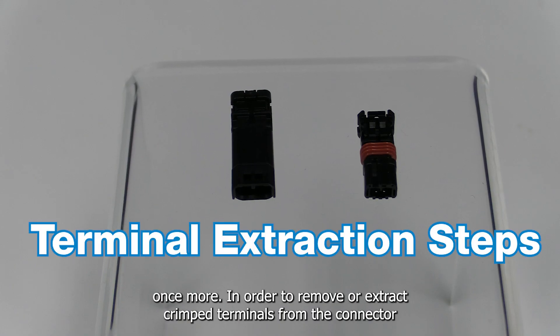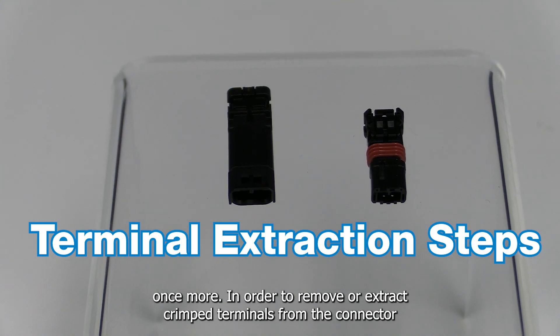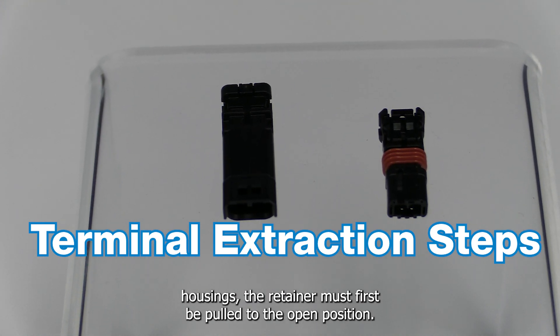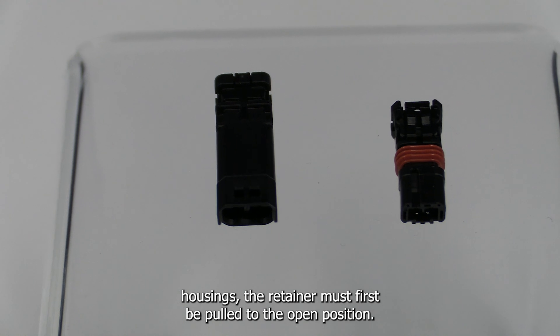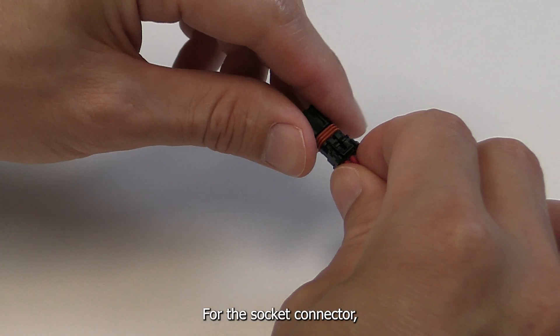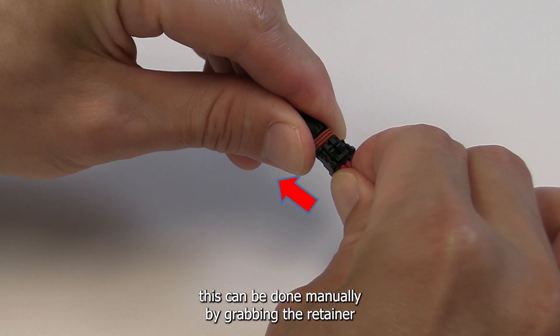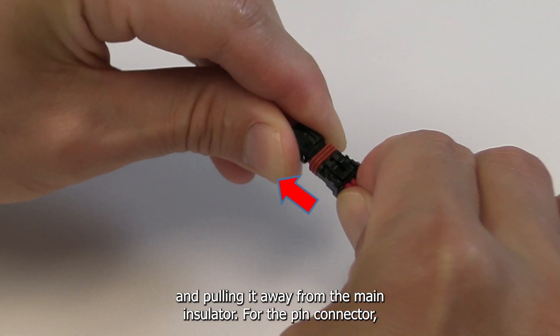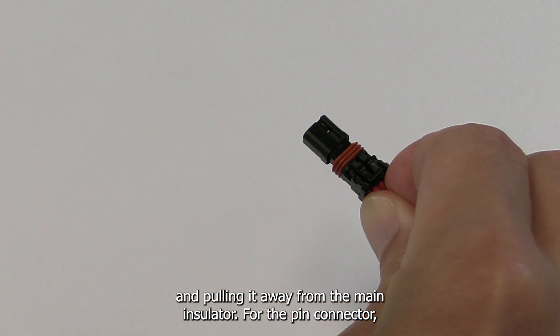In order to remove or extract crimped terminals from the connector housings, the retainer must first be pulled to the open position. For the socket connector, this can be done manually by grabbing the retainer and pulling it away from the main insulator.